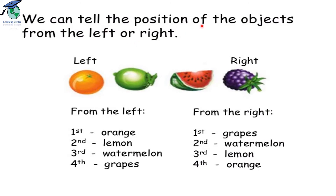We can tell the position of objects from the left or the right. When you start from this side, it is the left side, and when you start from this side, it is the right side. From the left, the first fruit is the orange, the second is the lemon, the third is the watermelon, and the fourth is the grapes. And if you start from the right side, the first is the grapes, the second is the watermelon, the third is the lemon, and the fourth fruit is the orange. So when you do any question, first you have to see whether you have to start from the left side or the right side.